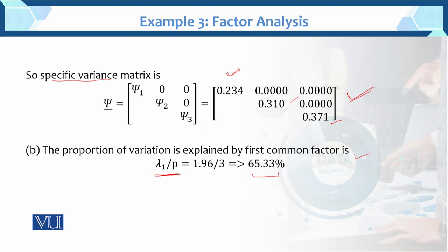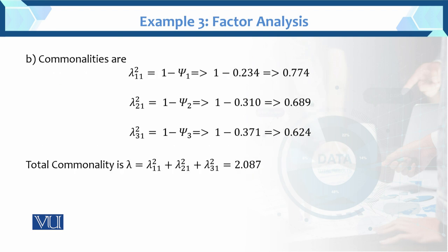The first variable explains 65.33% variation, and the remaining variation goes to other factors. So the proportion of variation explained by the first common factor, which has the highest eigenvalue lambda 1, is 65.33%. Now we find communalities. Communalities are the sum of squares: lambda 11 squared plus lambda 21 squared plus lambda 31 squared. Total communalities equals 2.087, and these values cannot be greater than 1 individually.